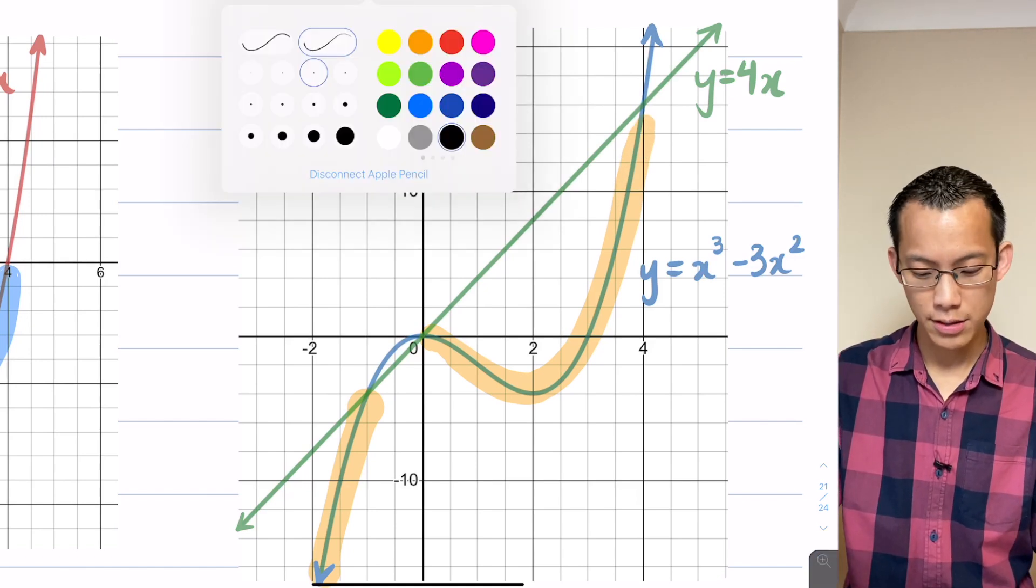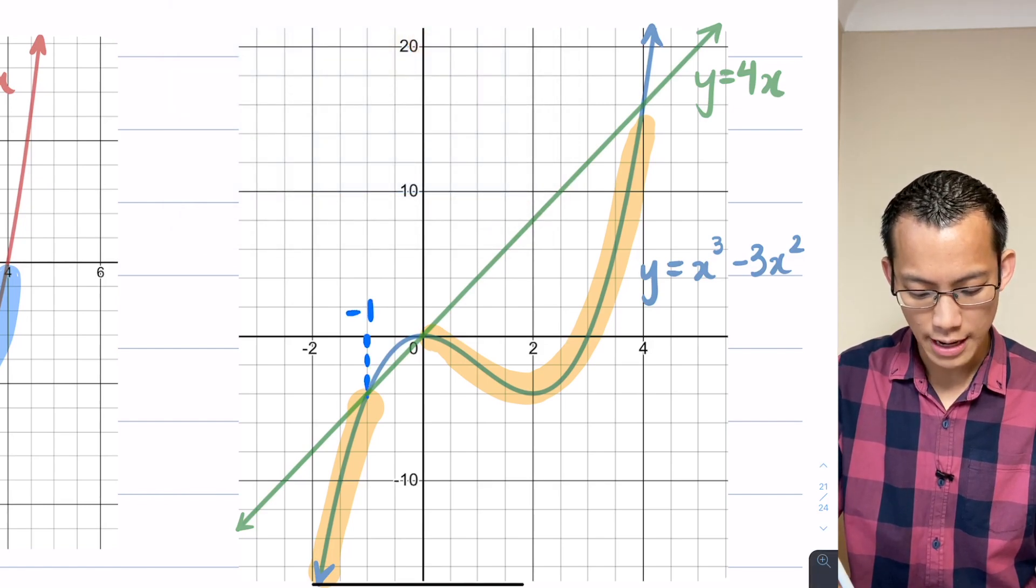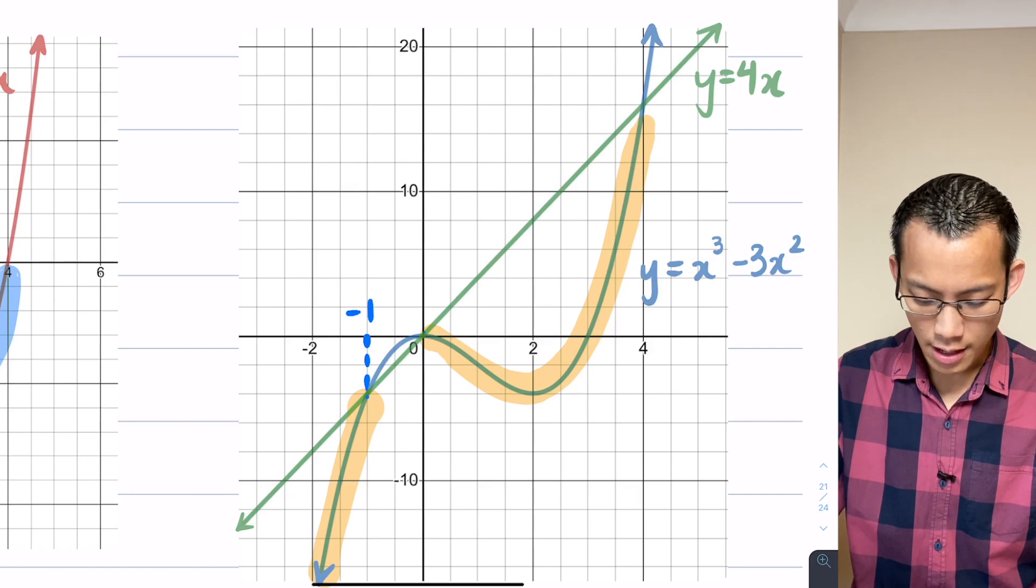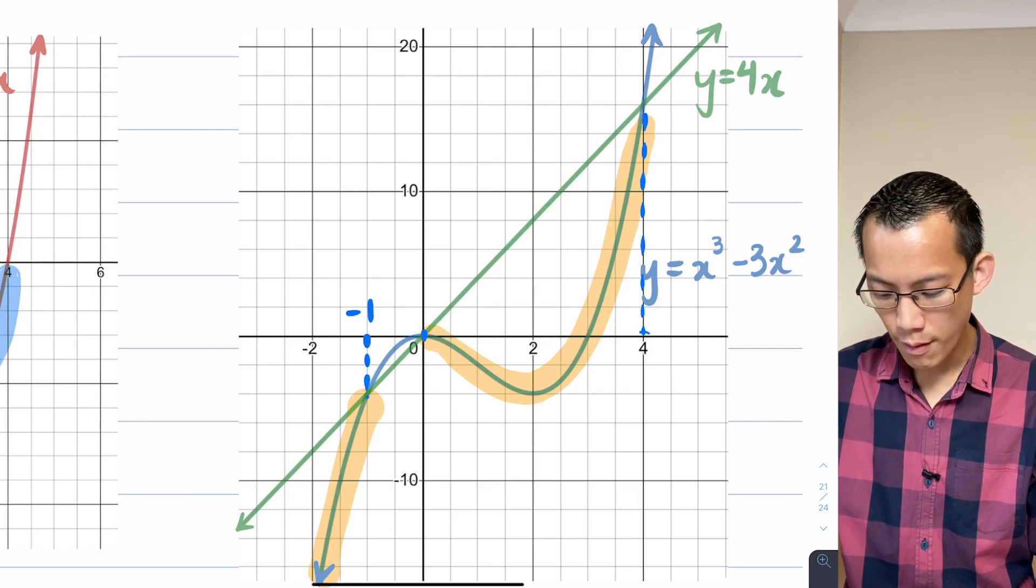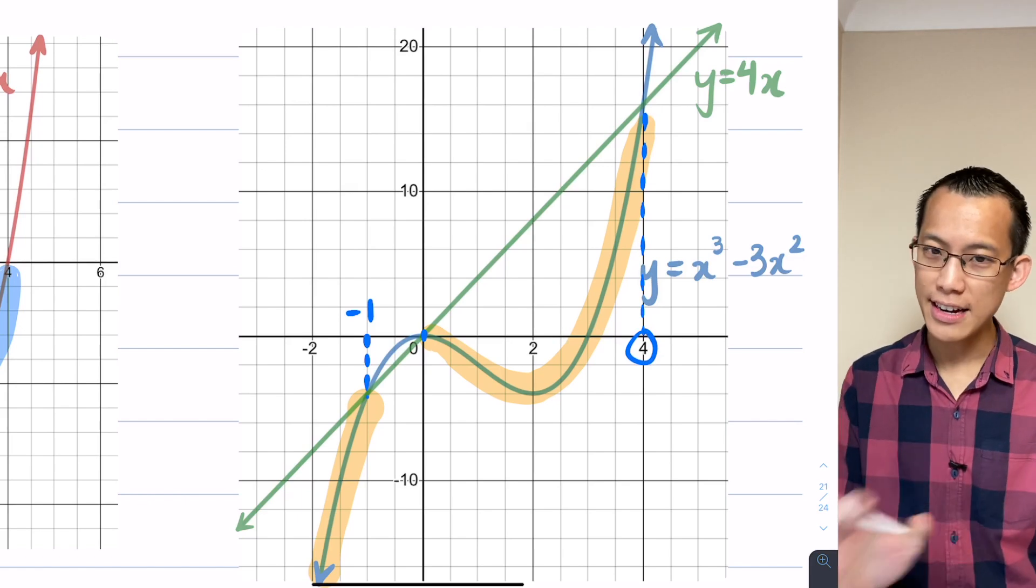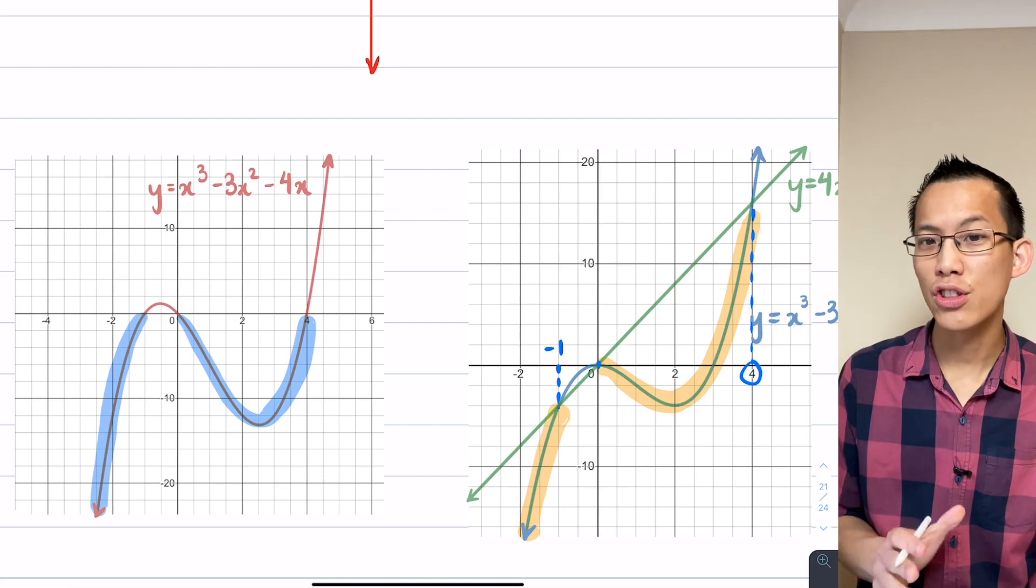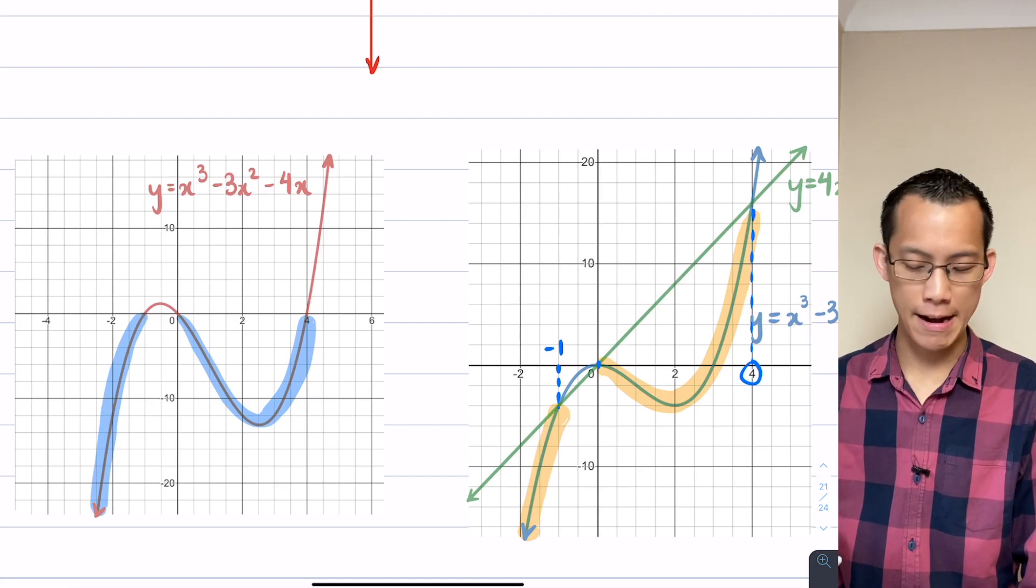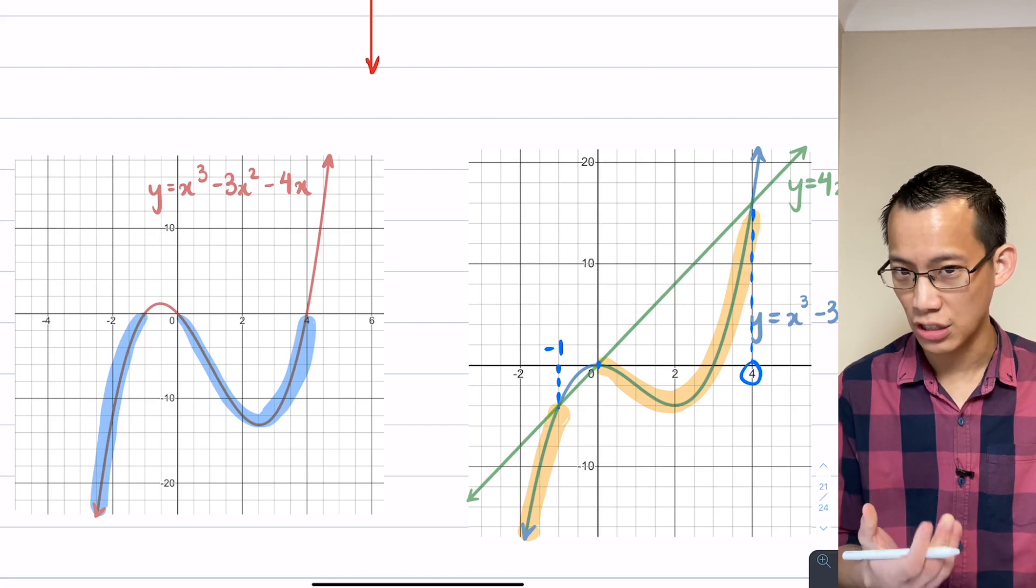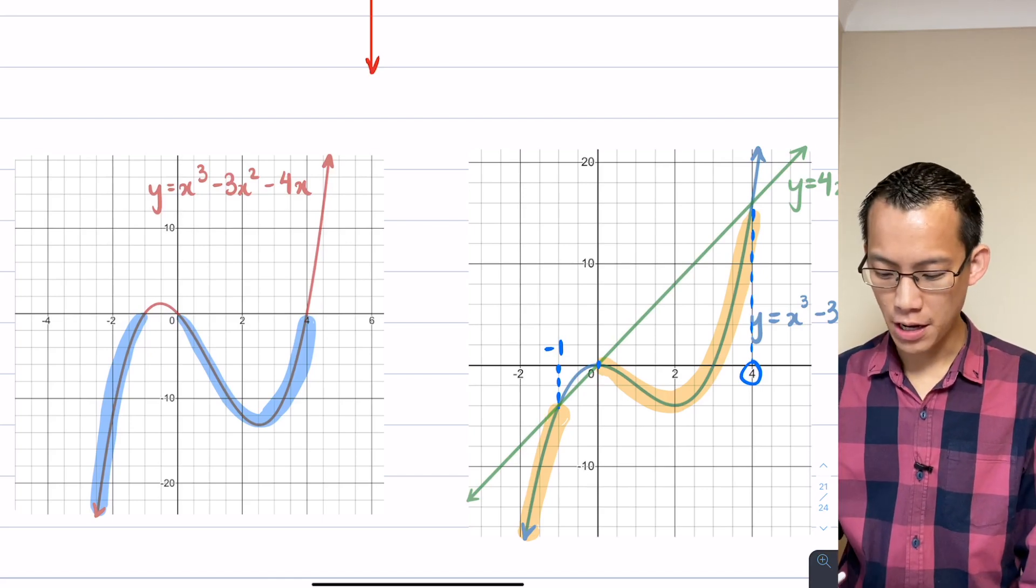So you're getting the identical solution, but I hope you recognize that, at least in my brain, that thing on the left is a lot more simple to conceptualize than the thing on the right. The thing on the right requires a lot more technical accuracy to actually draw it properly. Whereas the thing on the left, we're much better at doing confidently.